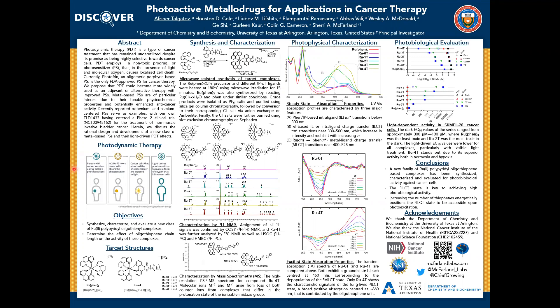A person with cancer receives a drug called a photosensitizer, and in time, cancer cells absorb this photosensitizer, and later, once exposed to the light, it forms reactive oxygen species that kill cancer cells.